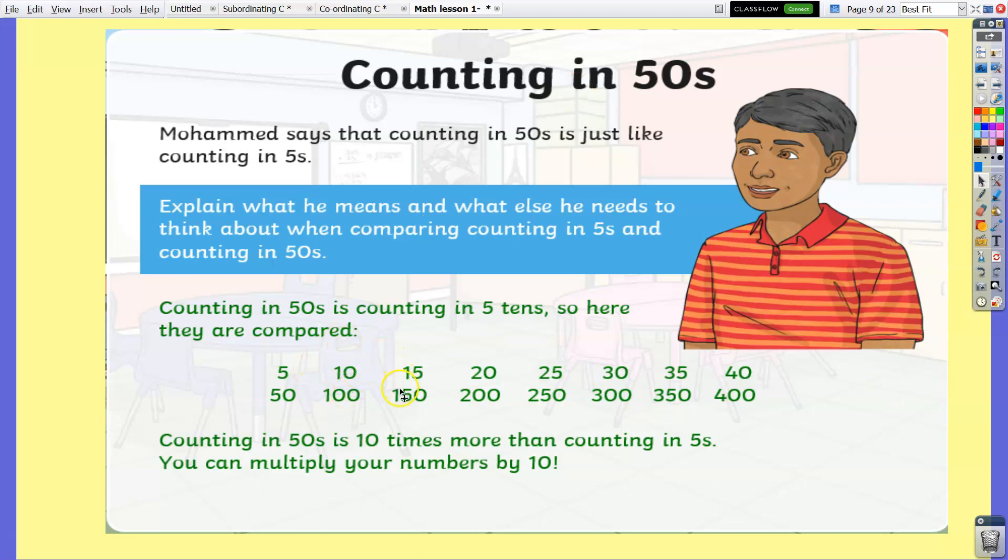Counting in 50s is counting in 5 tens. Here's how they compare: 5, 10, 15, 20, 25, 30, 35, 40. In counting by 50s, all you need to do is add 0 to each number: 50, 100, 150, 200, 250, 300, 350, 400. So counting in 50s is 10 times more than counting in 5s. You can multiply your number by 10 or simply add zeros to the number.